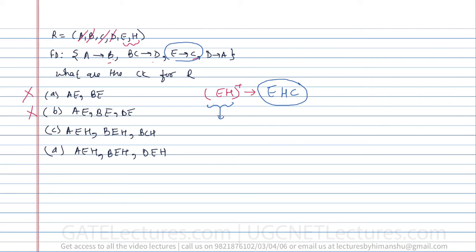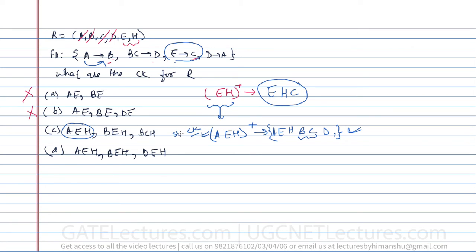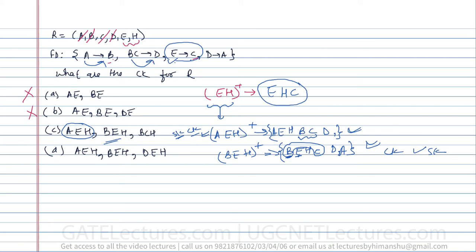We need to add other attributes to EH. Taking the closure of AEH: with A we determine B; with E we determine C; with BC we determine D; with D we determine A — so all attributes are determined. AEH is a candidate key. Taking the closure of BEH: with E we determine C; with BC we determine D; with D we determine A — all attributes are determined. BEH is also a candidate key.